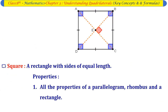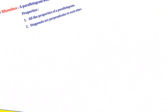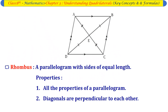Square: A rectangle with sides of equal length. Properties: all properties of a parallelogram and a rectangle. Rhombus: A parallelogram with sides of equal length. Properties: all properties of a parallelogram, and diagonals are perpendicular to each other.